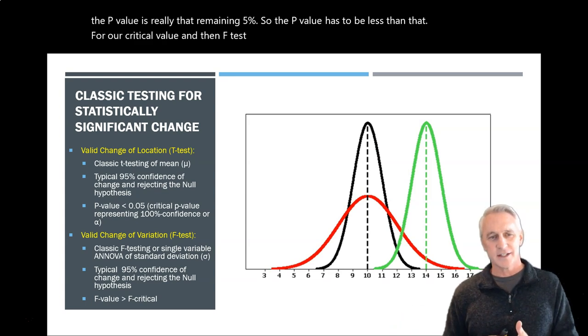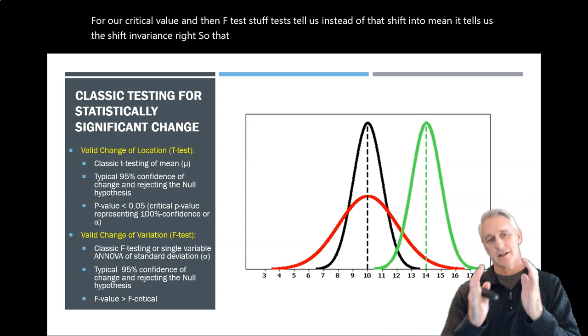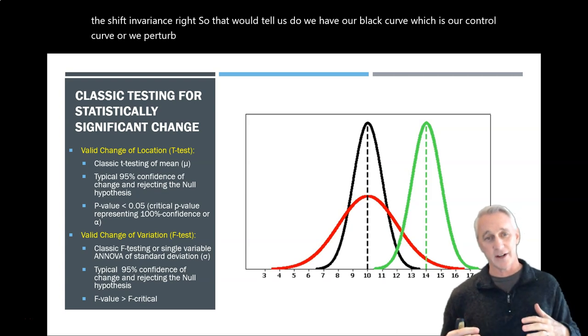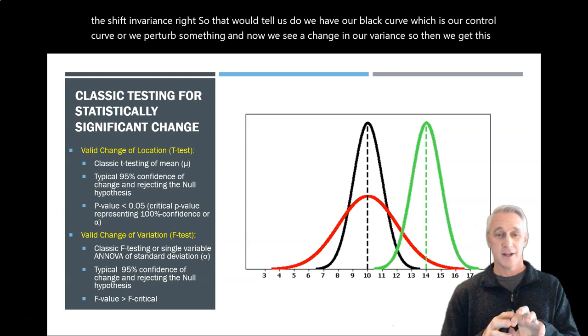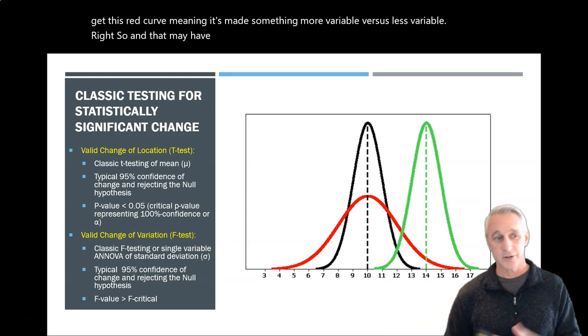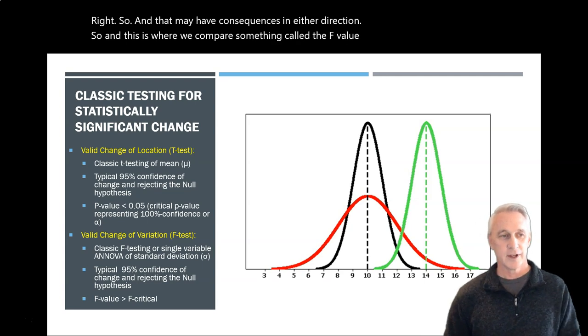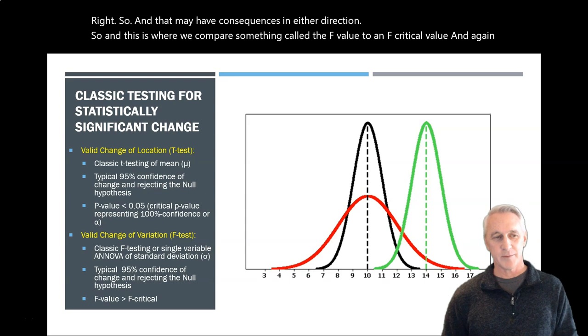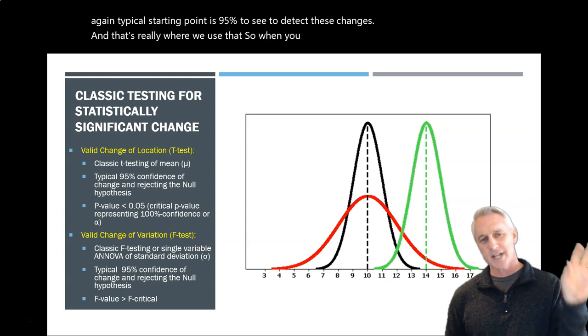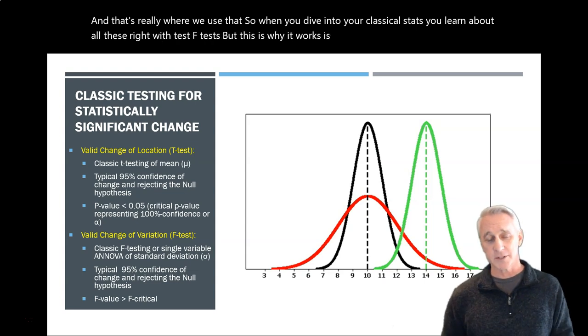And so this is where we use the p-values to measure whether or not we have an actual statistical change. So if we use 95%, then the p-value is really that remaining 5%. So the p-value has to be less than that for our critical value. And then f-tests. F-tests tell us, instead of that shift into mean, it tells us the shift in variance. Right? So that would tell us, do we have our black curve, which is our control curve, or we perturbed something and now we see a change in our variance. So then we get this red curve, meaning it's made something more variable versus less variable. Right? So, and that may have consequences in either direction. So, and this is where we compare something called the f-value to an f-critical value. And again, typical starting point is 95% to see, to detect these changes. And that's really where we use that. So when you dive into your classical stats, you learn about all these, right, with t-tests, f-tests. But this is why it works is because of those assumptions we've already made through EDA.